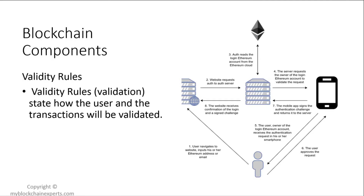Validity rules is a very important blockchain component — how do you validate the state? In other words, how is a transaction validated? It's important to define in the algorithm how a transaction is going to be made valid. In proof of work it's handled differently than in proof of stake. At a high level, validity rules is typically how the user and the transactions are validated: does that user have a valid wallet, and does that user have the right keys?